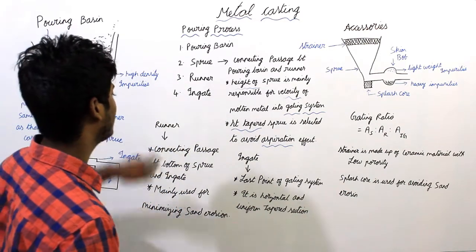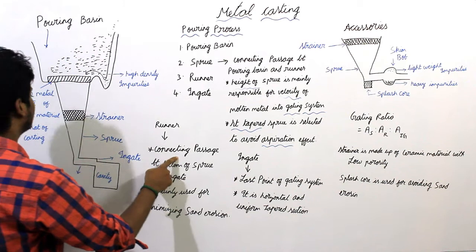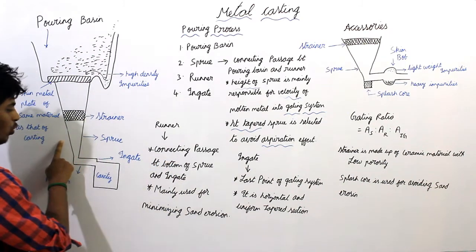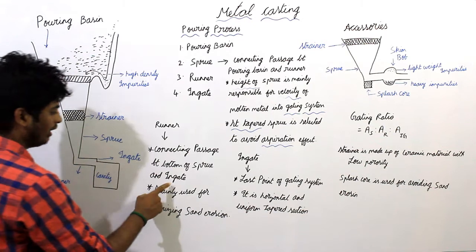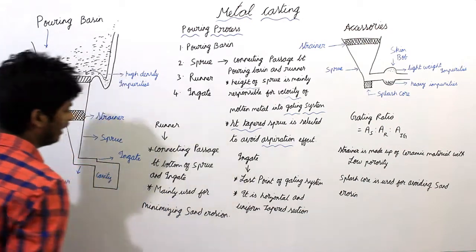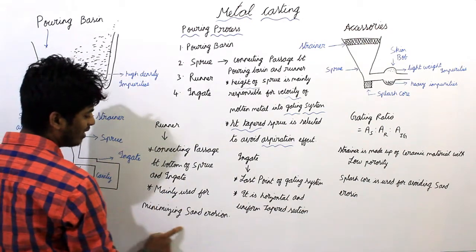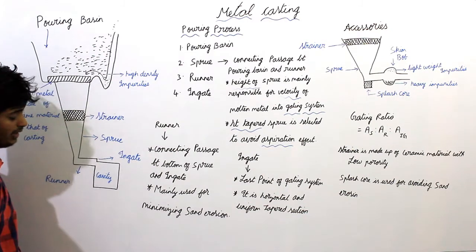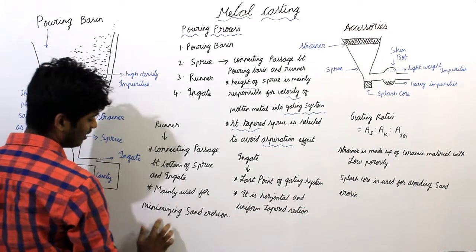Next element is the runner. Runner acts as a connecting passage between sprue and ingate system. It is mainly used for minimizing sand erosion.